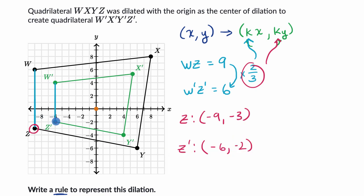Let's see, Z prime is indeed, the coordinates are negative six, negative two. So once again, we have multiplied by two thirds in either of these situations. So we feel very comfortable.